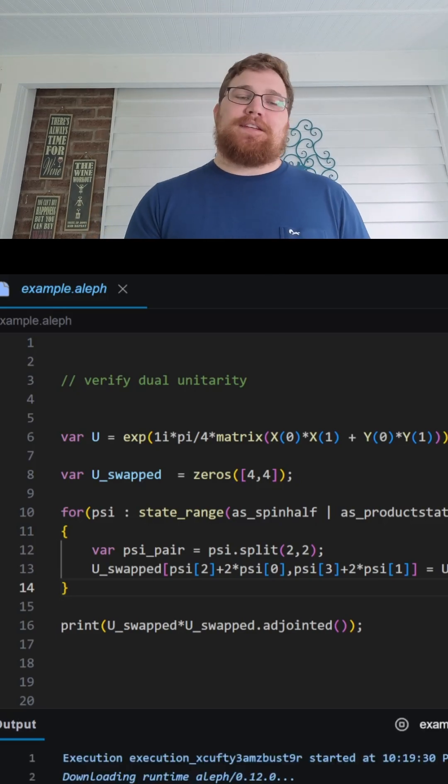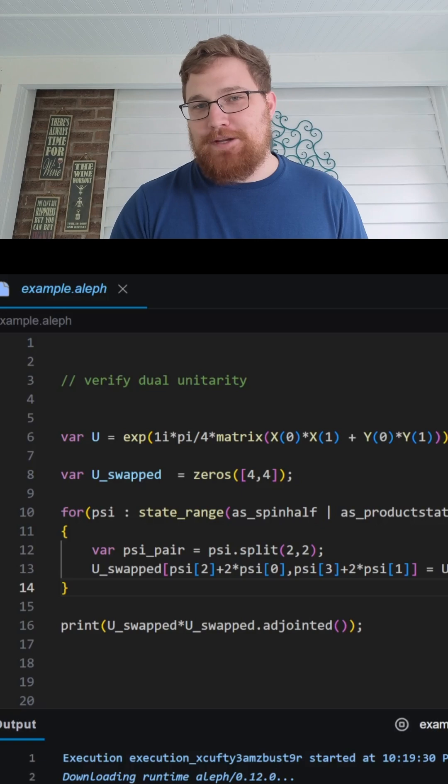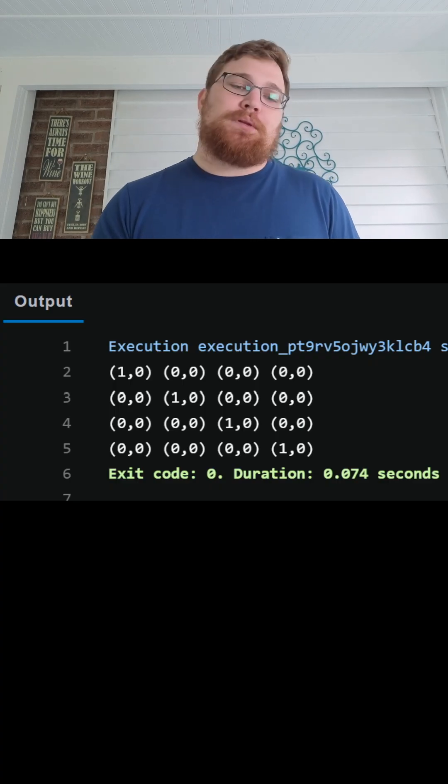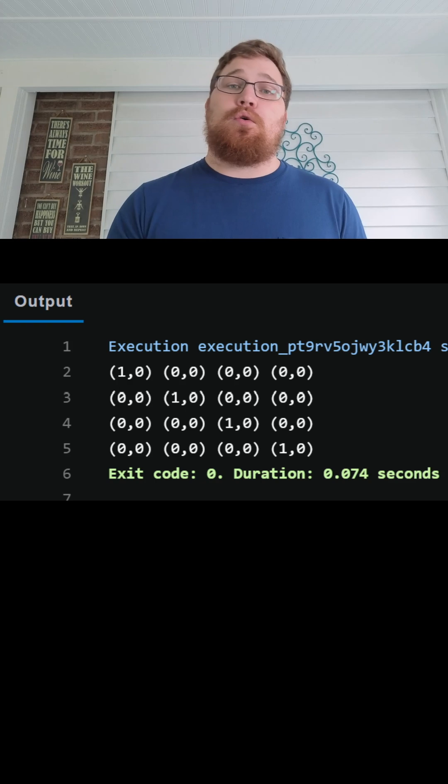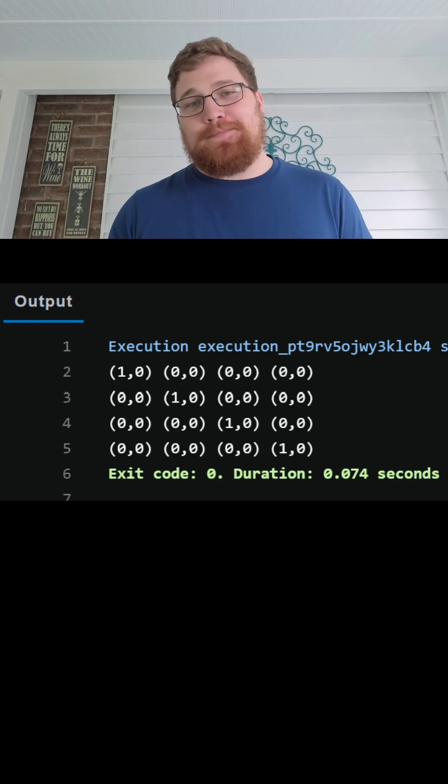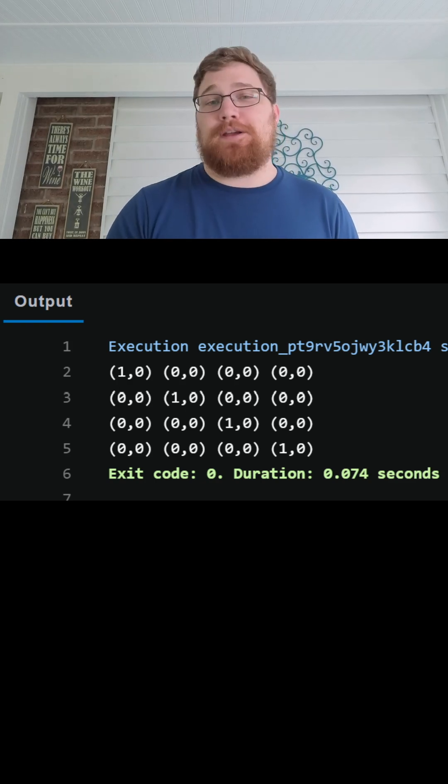Then all that's left is to test if this is, in fact, an identity matrix when we multiply USwapped by its Hermitian conjugate or its adjoint. And as you can see, that's true. This is a dual unitary matrix.